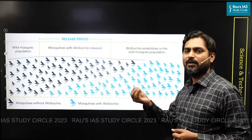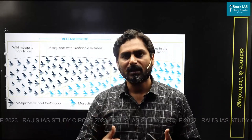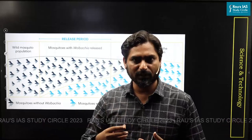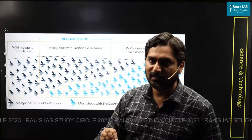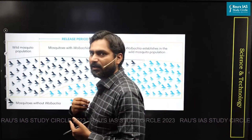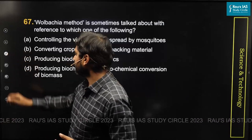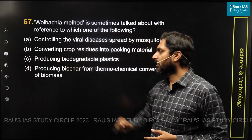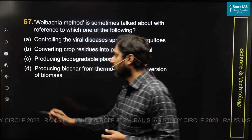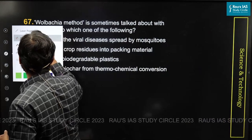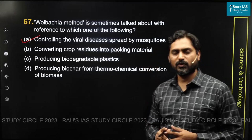If mosquitoes in the wild population are carrying Wolbachia bacteria, it means they won't be carrying the viruses. So if most or all of the mosquito population carries Wolbachia, they will not carry the viruses, and in this way we can restrict the spread of deadly diseases. The correct answer to question 67 is the first option: controlling the viral diseases spread by mosquitoes.